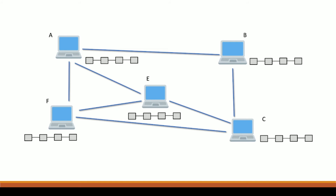Let's look at the third keyword — distributed. This is how a blockchain network looks: we have different computers connected via a P2P network, which we will talk about in upcoming videos. For now, just imagine these computers are connected with each other. Each of these computers, as you can see, is holding a blockchain.